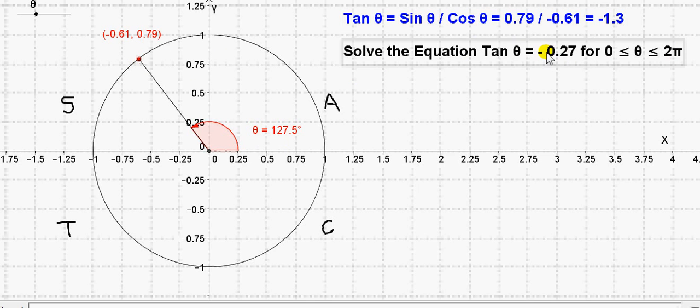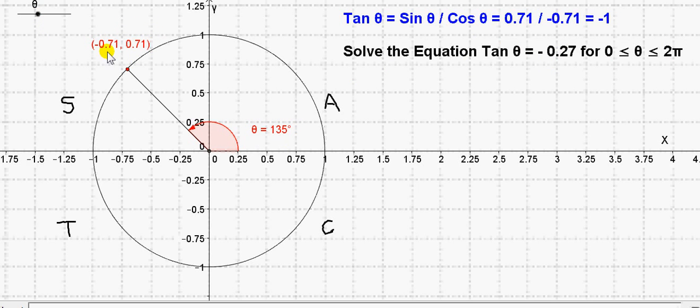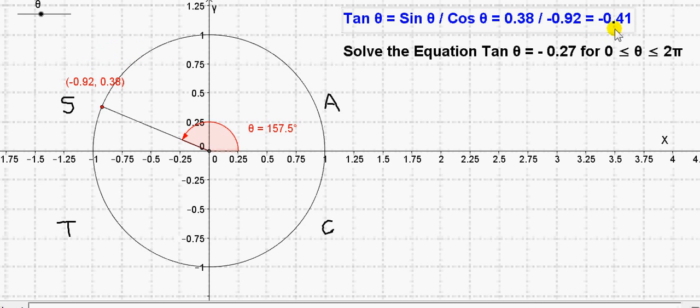So let's see the angle θ on this unit circle whose tan is minus 0.27. We want the ratio of these numbers to be minus 0.27. Here it is. You see that θ is 165 degrees.